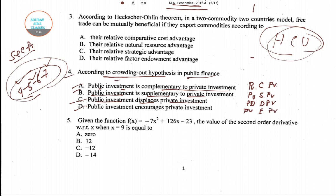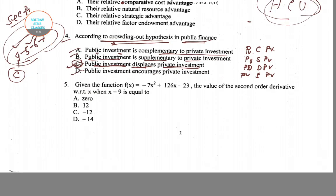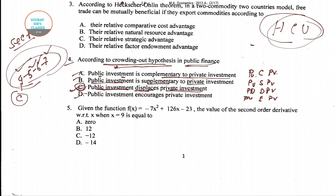According to the crowding out hypothesis in public finance, due to public investment it displaces private investment. So option C is the right answer for question number four.